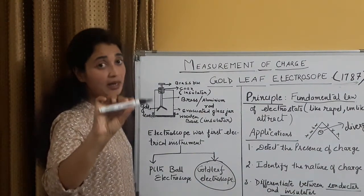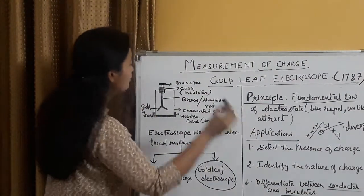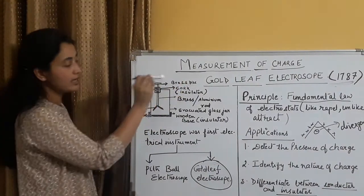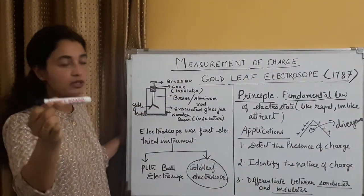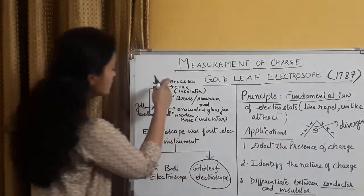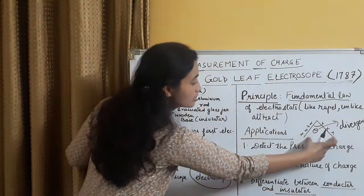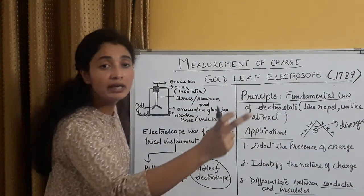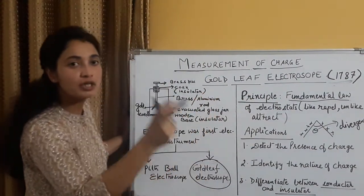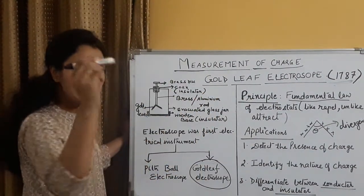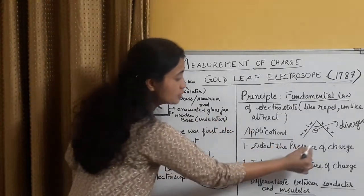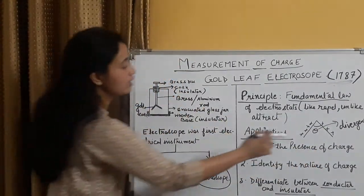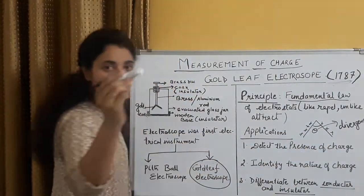Dono pe positive charge hai, isliye ye leaves repel kar rahe hai, aur theta angle ka divergence unke beech mein hai. Agar mujhe is rod ko check karna hai, ki ye charged hai ki nahi, I will bring it and touch it here, isse hum top pe touch karenge. Agar suppose, ye bhi pehle se positively charged hai, toh ye positive charge ki wajah se, ye divergence badh jayega, theta will increase, increased divergence ensures ki this rod is also positive. Ye charge rakhta hai, pehli baat, tabhi isne isko diverge kiya hai, ye uncharged nahi hai.